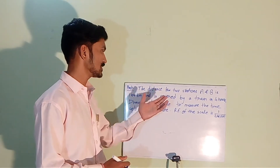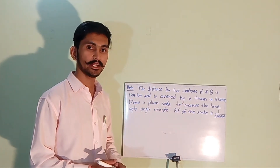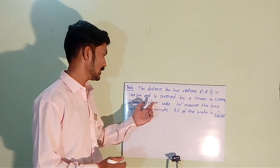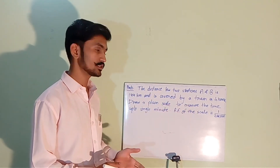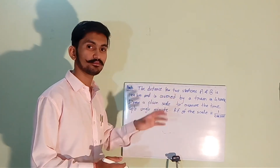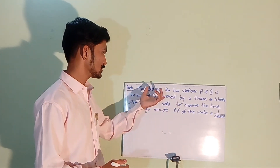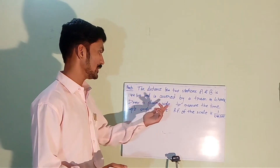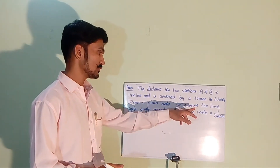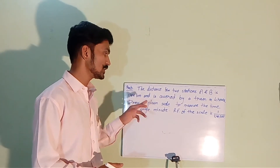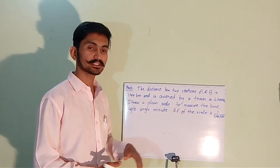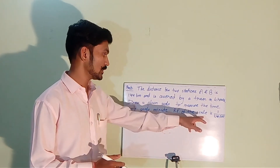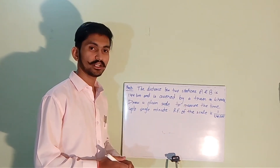The question is: the distance between two stations A and B is 144 kilometers, covered by a train in 4 hours. This data will help us to get the length of the scale and draw a plane scale to measure the time up to a single minute. The RF of the scale is 1 divided by 2,40,000, which is provided directly in the question.